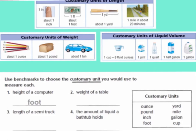Let's look at our customary units of length — how long or tall something is. About one inch would be from the tip of your finger to your first knuckle. One foot would be about the size of a license plate. One yard would be about the length of a baseball bat. And one mile would be the distance you walk in about 20 minutes.